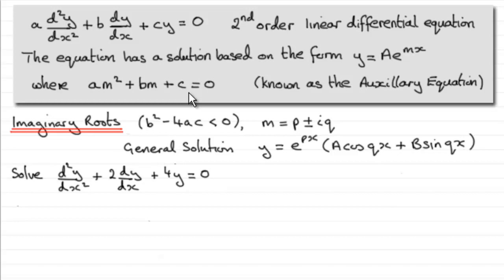And in this video what I want to look at is an example where the roots of this auxiliary equation are imaginary roots. And I showed you that if this were the case then the roots would be complex, they would have the form p plus or minus iq where p and q are real numbers and i was the square root of negative 1.